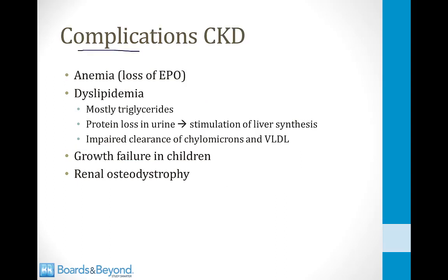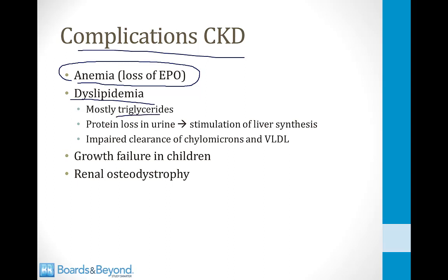Complications of chronic kidney disease include anemia from loss of erythropoietin, leading to normocytic anemia. Dyslipidemia, usually high triglycerides, occurs because protein loss in urine stimulates liver synthesis and impairs fat clearance. Children with CKD can develop growth failure.